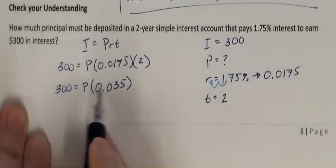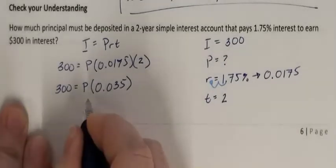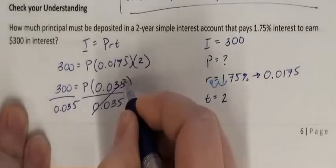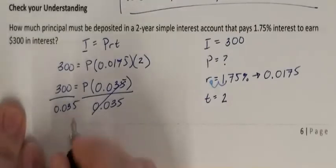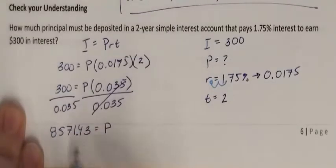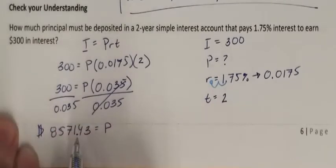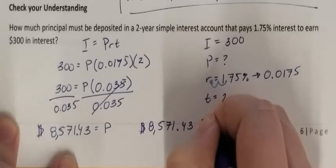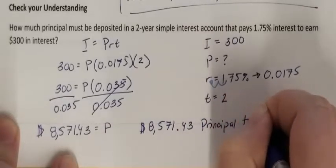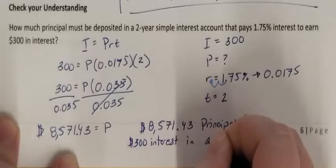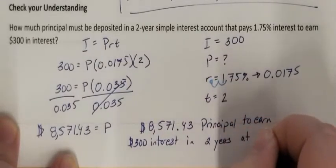Multiplying R and T together gives 0.035. So 300 equals P times 0.035. I need to unstick these — they're connected by multiplication, so I divide both sides by 0.035. 300 divided by 0.035 is 8,571.43. That's principal, so it's a dollar amount. You need $8,571.43 worth of principal to earn $300 in interest in 2 years at 1.75%.